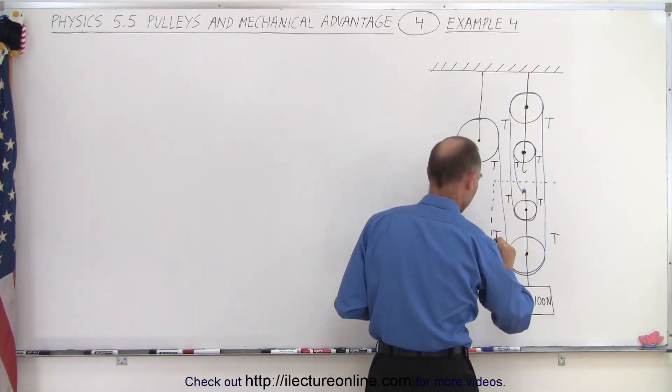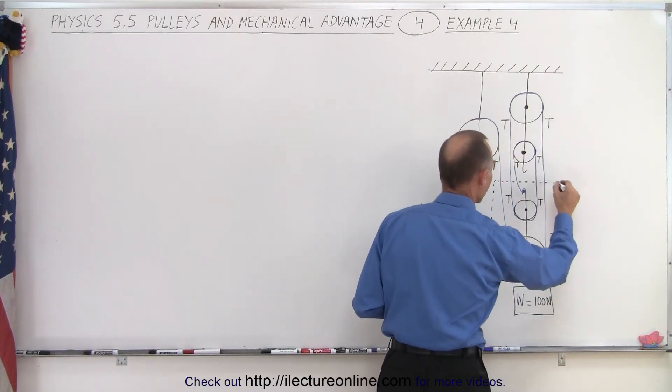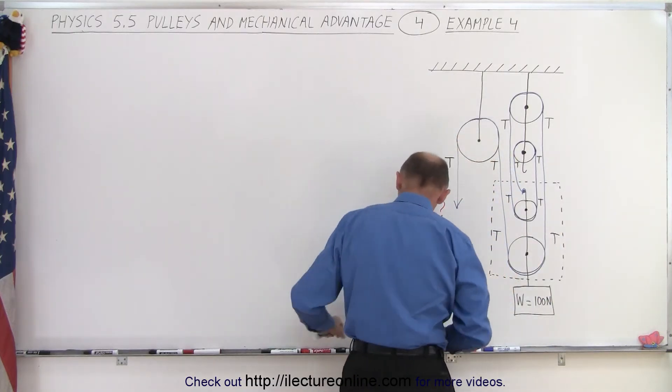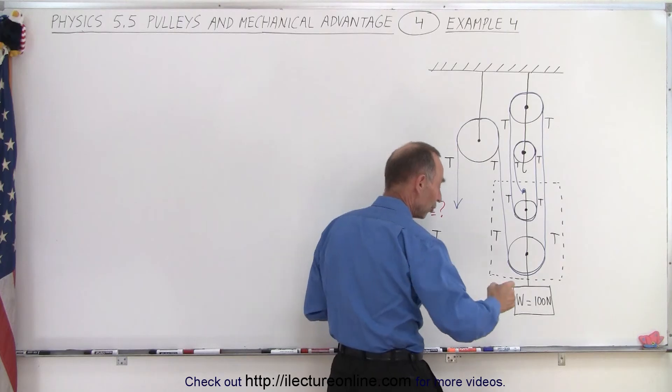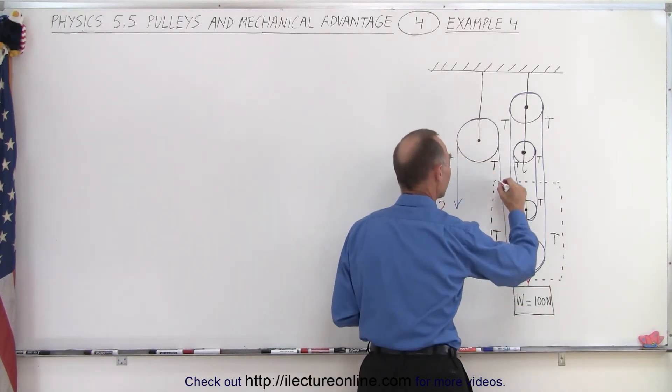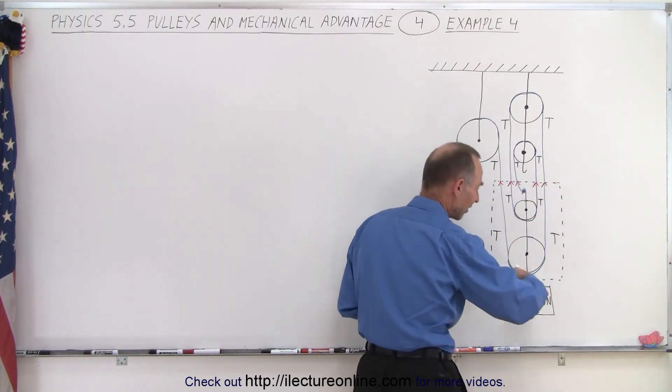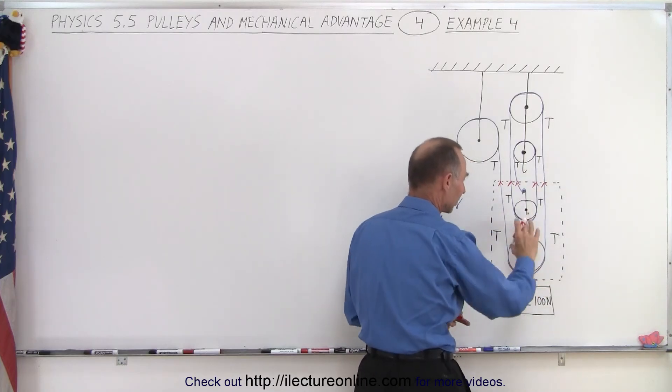We're going to draw it through here and come down here and through here. So that means that we have a force pulling down this way and we have five forces pulling this way. So relative to what's in here inside the free body diagram, relative to these two pulleys, all the strings are pulling upward.